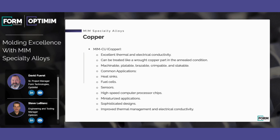Next, we have copper. MIM copper is an excellent thermal and electrical conductor, and it can be treated just like wrought copper — it's machinable, platable, brazeable, crimpable, and stakeable. Anything you can do to a wrought copper part, you can do to a MIM copper part. Some common applications include heat sinks, fuel cells, and sensors. It's often used in miniaturized applications, primarily for thermal management and electrical conductivity.